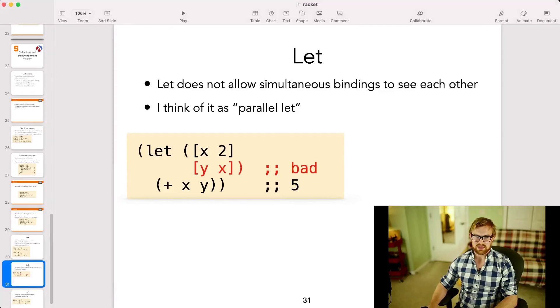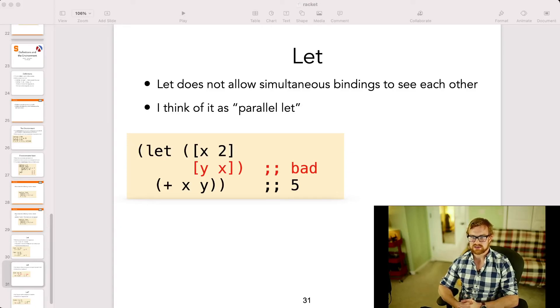Now one thing that I can't do with let, which is a little bit counterintuitive, and students often run into this problem, is that it doesn't allow simultaneous bindings to see each other. So I often think of this as parallel let. So for example, I can see right here, I can define let x to be 2, and then let y to be x. Well, I'm not allowed to do this, because the let form alone doesn't let any of the subsequent simultaneous bindings see any of the other ones. I think of them as all being assigned, for example, in parallel. You can imagine when you get to the let, you go off and you compute all of the different branches in parallel, then you join back up before you enter the body of the let. That's kind of how I think about it.